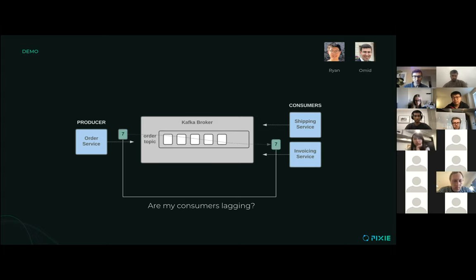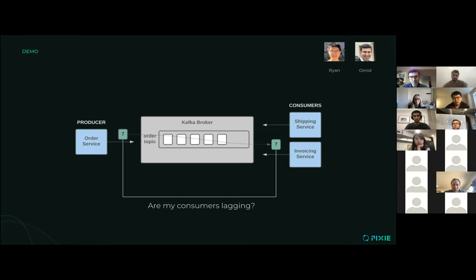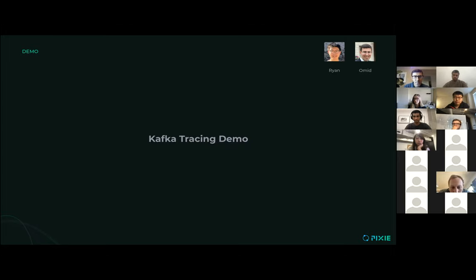When you have an application with a message bus, an important question that often arises is: are my consumers keeping up with the data being produced — is there any lag? For example, if the producer creates a message with offset seven and pushes it to the Kafka broker, ideally the shipping and invoicing services immediately pull that same order and start working on it. But if there's any issue, you might see a lag. The demo we're going into is going to try to answer this question using Pixie.